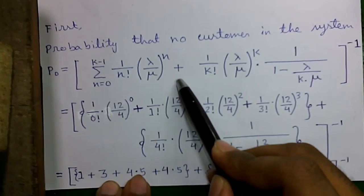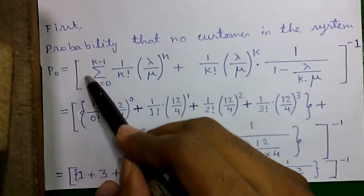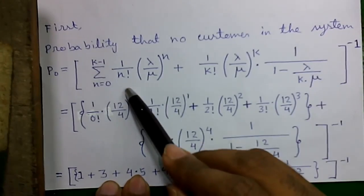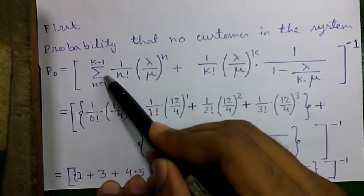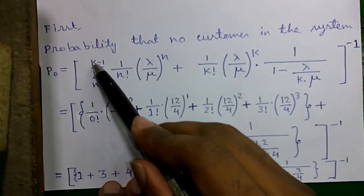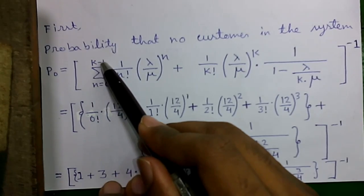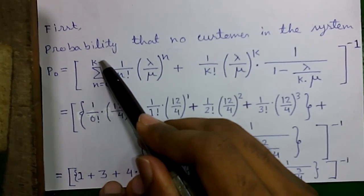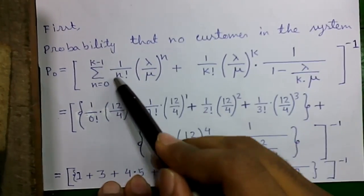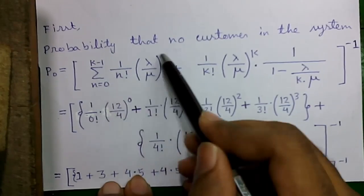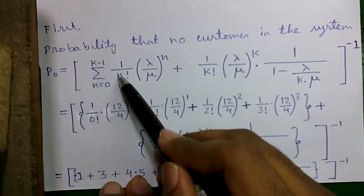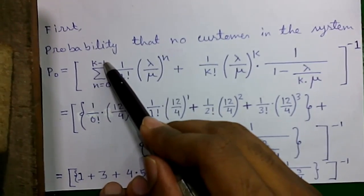Let us break the formula into two parts: the summation part and the second part. For the summation, we go from n=0 to n=k−1. Since k=4, that is 4−1=3, so we calculate four times: for n=0, n=1, n=2, and n=3 (which is k−1). The second part is calculated only once.